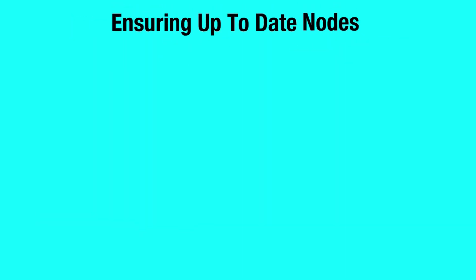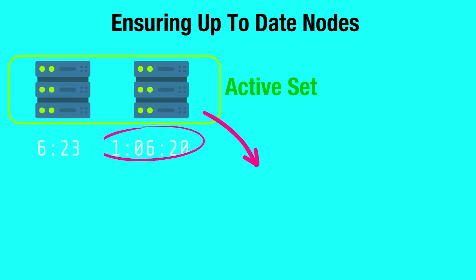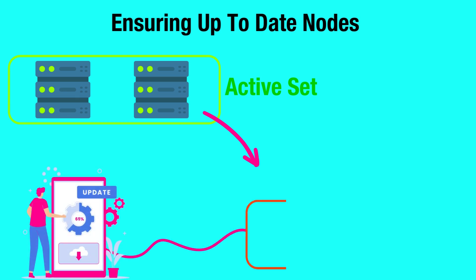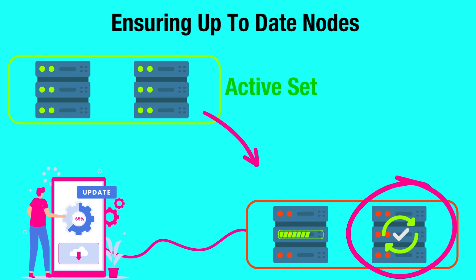Ensuring up-to-date nodes: technology and security measures evolve rapidly. By rotating older active nodes out, there's a higher chance that newer nodes, which might be equipped with the latest software and security patches, get introduced to the active set.